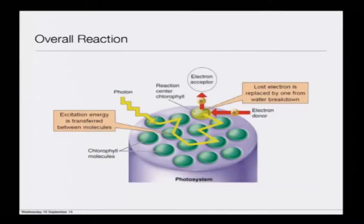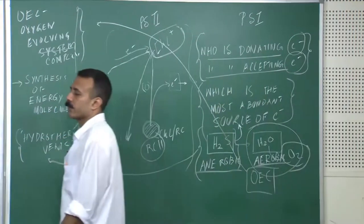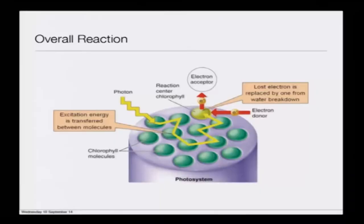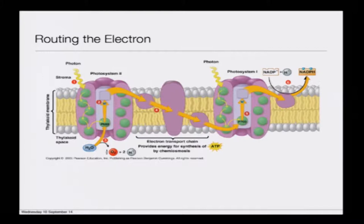This is the overall situation of the photo system. There is an electron donor, there is an electron acceptor; the lost electron is replaced by one from water breakdown. That is what the water breakdown is about — the donor of electrons — and excitation energy is transferred between molecules. With this overall geometry, let us see the overall map where these different reaction centers are.